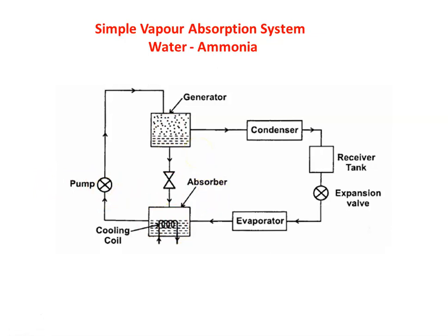How does the simple vapor absorption system work? We start from the outlet of the evaporator. The outlet of the evaporator is necessarily a vapor of refrigerant — ammonia vapor. This ammonia vapor goes to the absorber. In the absorber, we have water, and the ammonia vapor is absorbed by the water, forming an ammonia-water solution of high concentration. The vapor is leaving at higher temperature, so we have a cooling coil to reduce the temperature, keeping the solution as a highly concentrated ammonia solution.